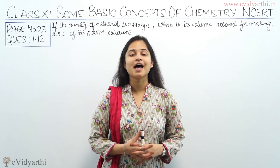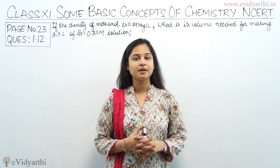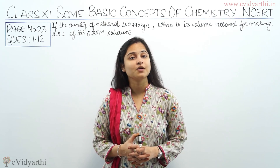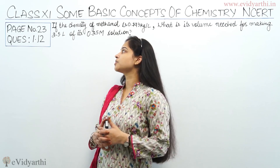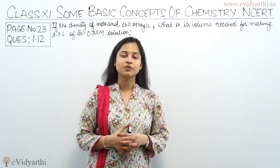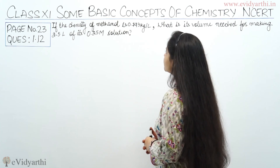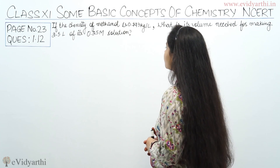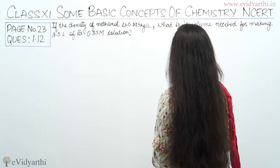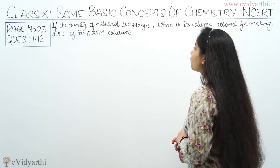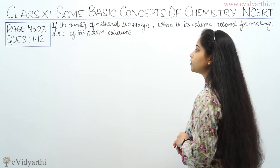Hello friends, I'm Raki and I'm back with another question of chapter number 1, some basic concepts of chemistry. In this video, I'll be discussing question number 12. The question is: if the density of methanol is 0.793 kg per litre, what is its volume needed for making 2.5 litres of its 0.25 molar solution?